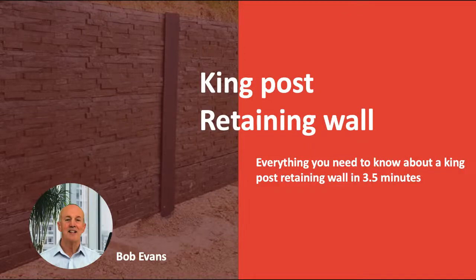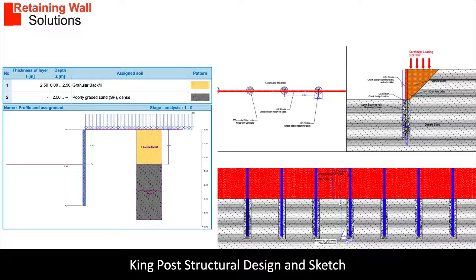Hello, my name is Bob Evans and I am going to give you a quick overview of a King Post retaining wall. A King Post retaining wall is a cantilever design. The posts are normally steel universal columns and are embedded into the ground.